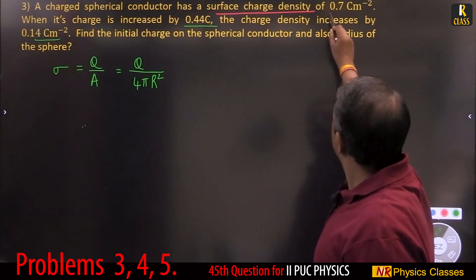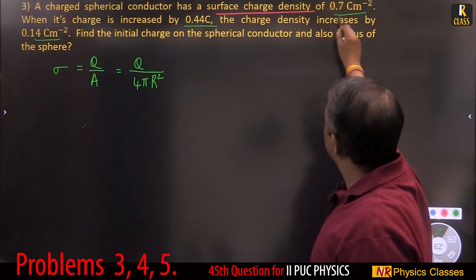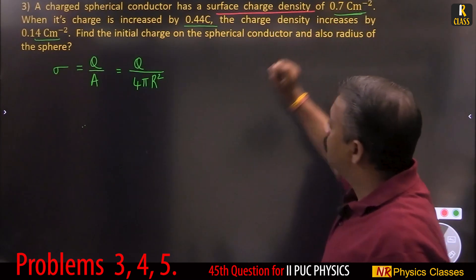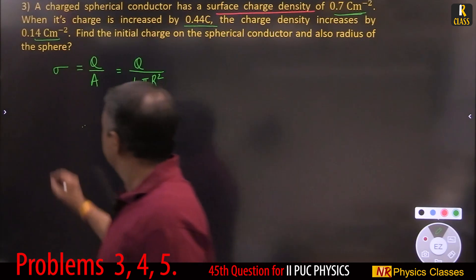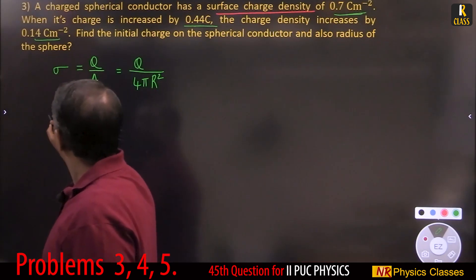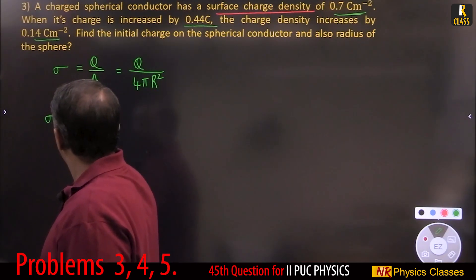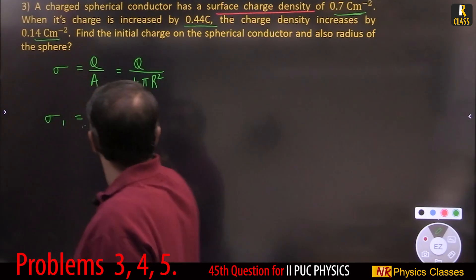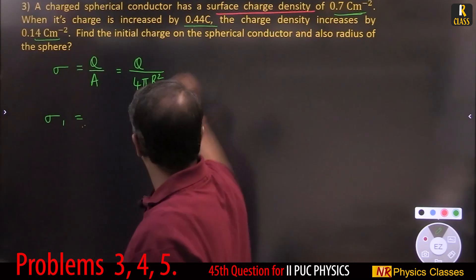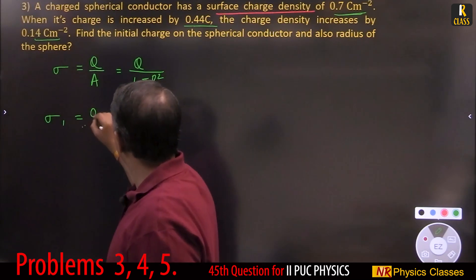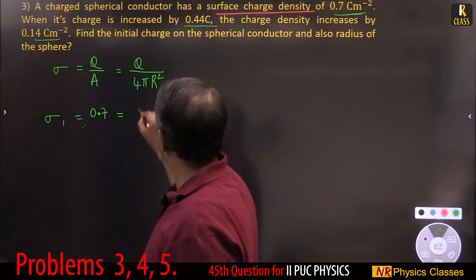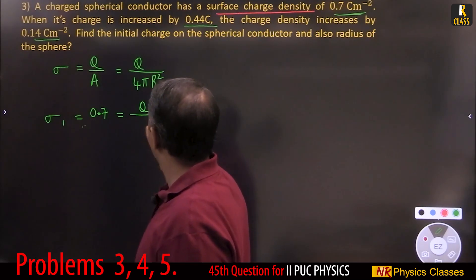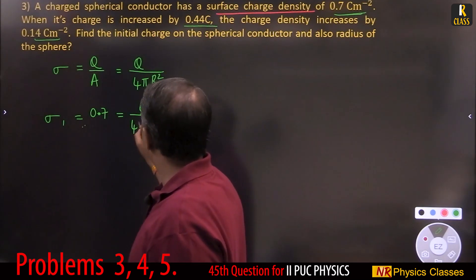Surface charge density with charge Q: first case, sigma 1 equals 0.7. So 0.7 equals Q divided by 4 pi r squared.